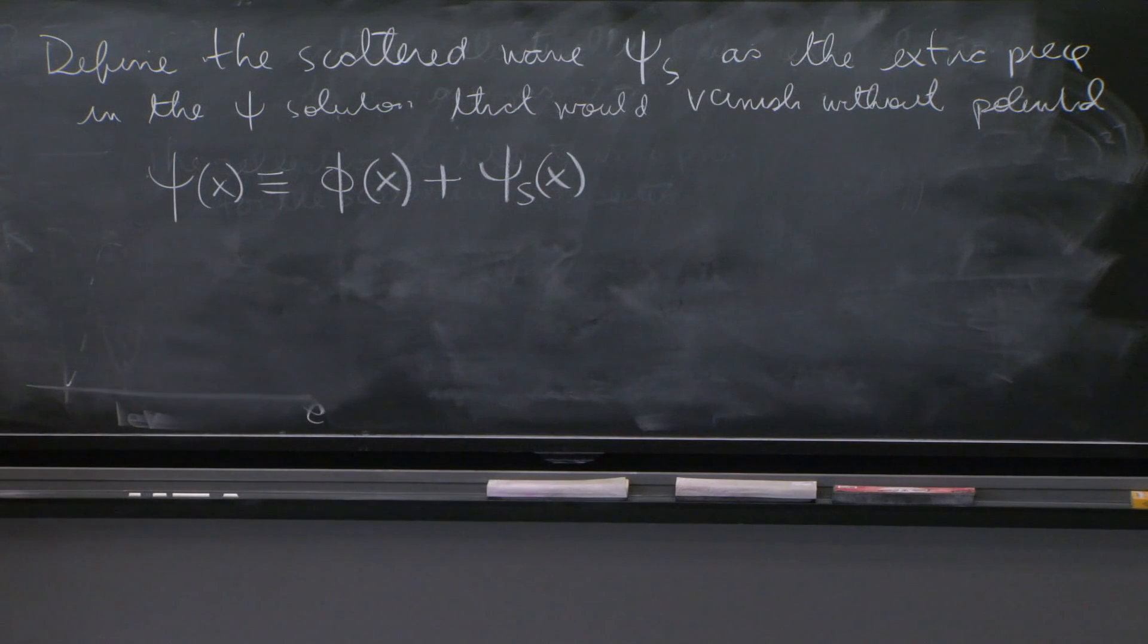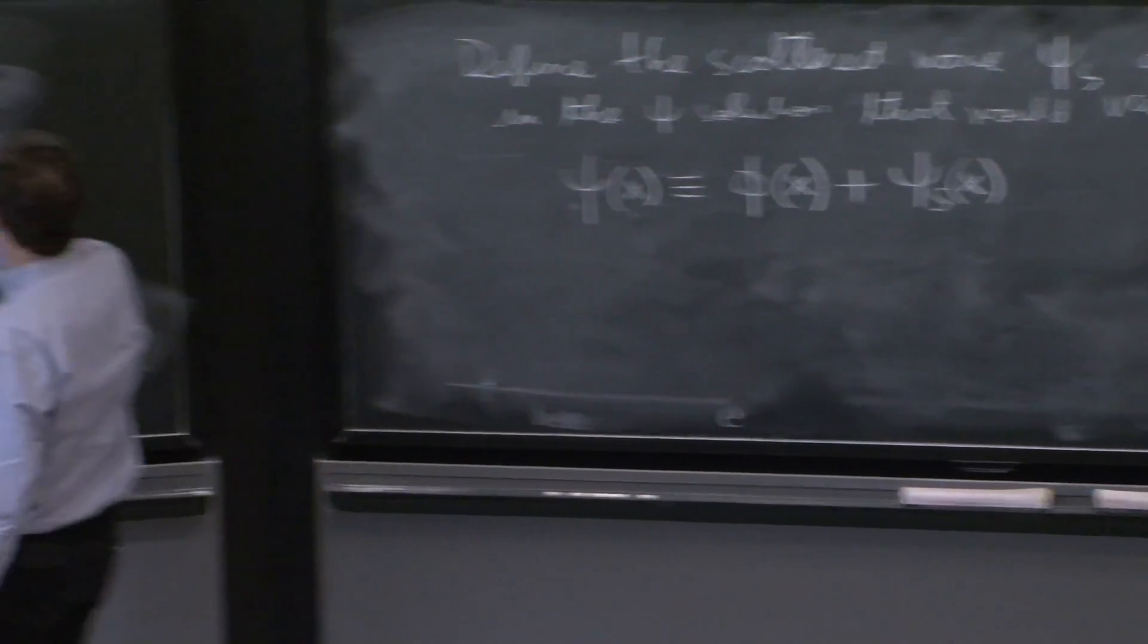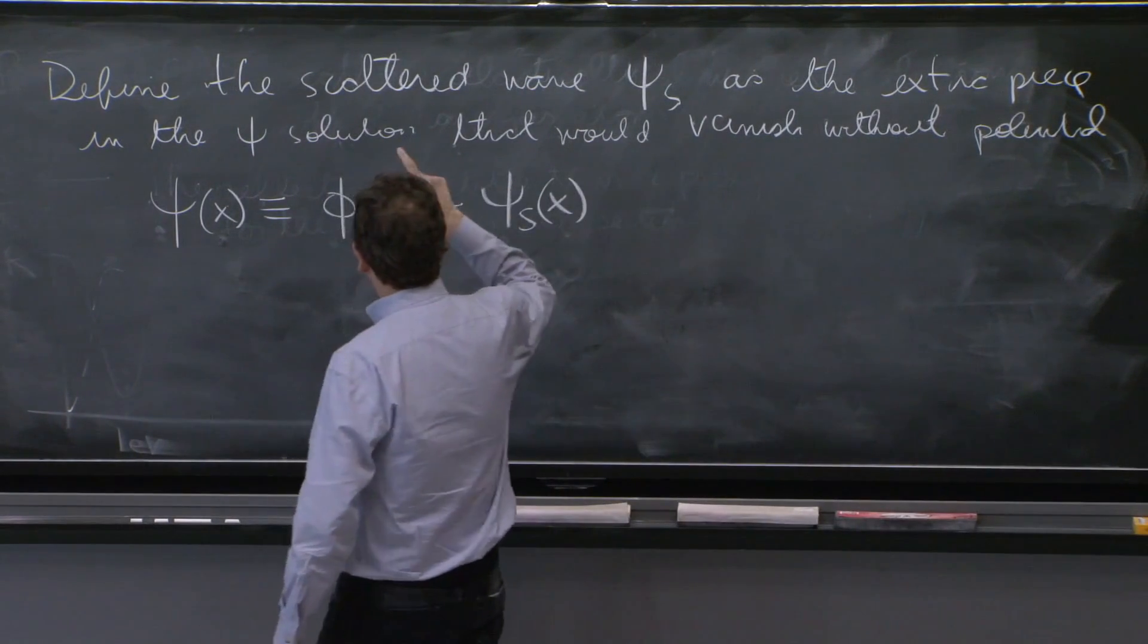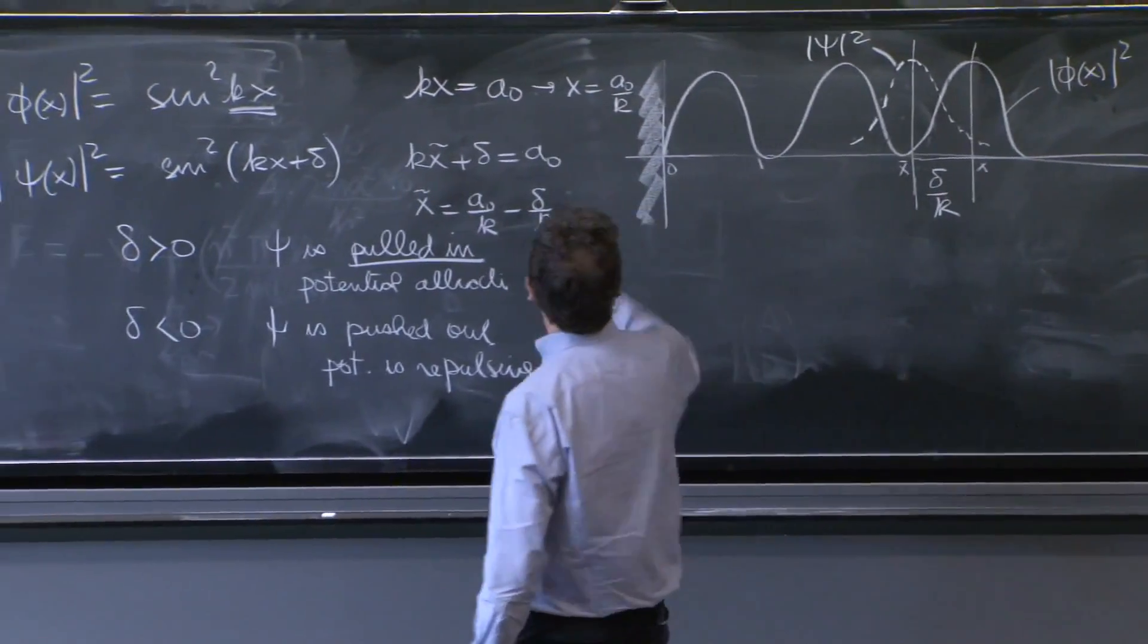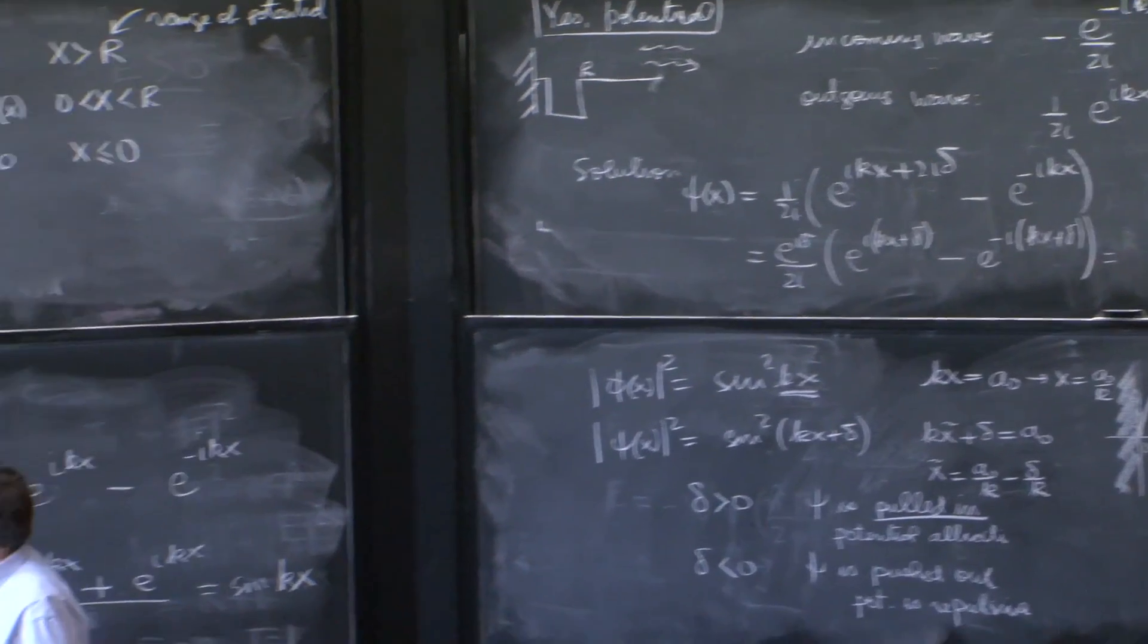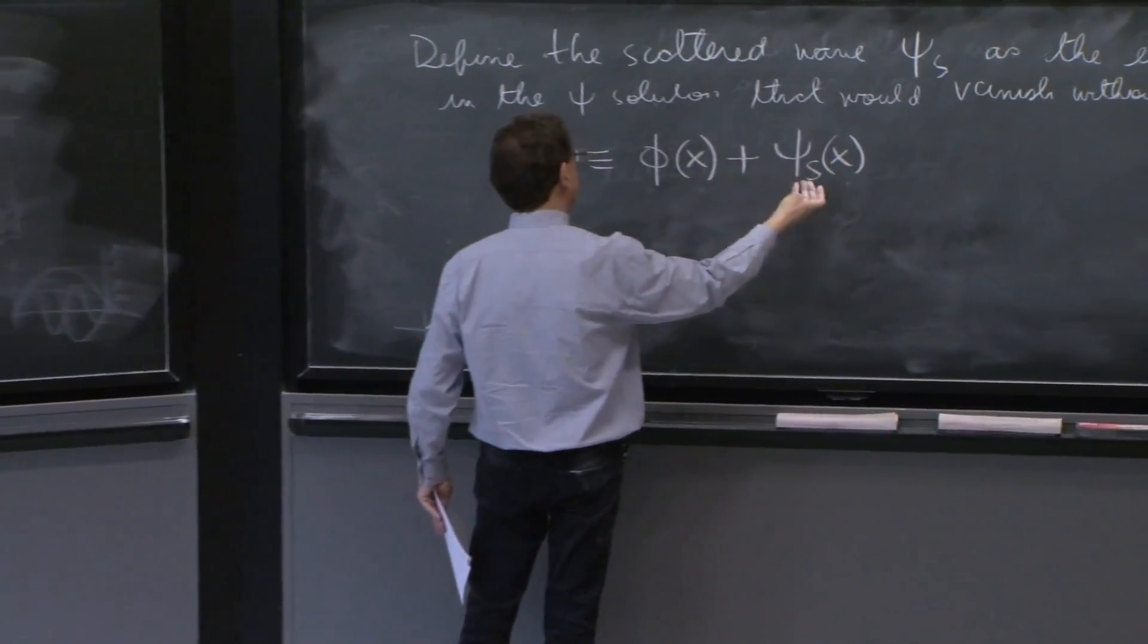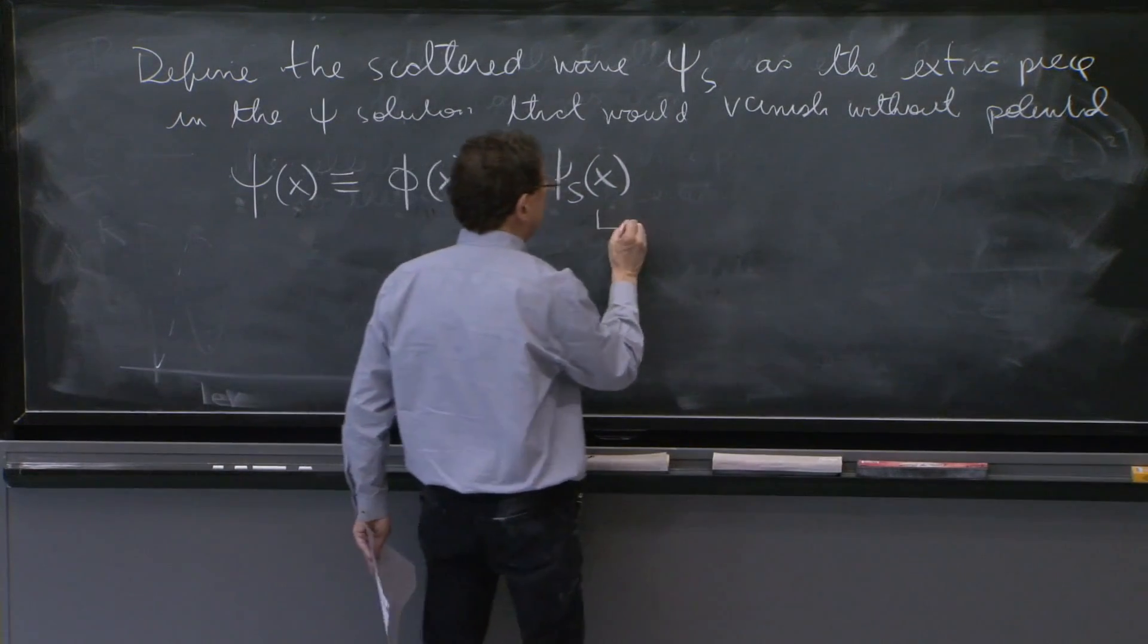The full scattering solution, the full solution when you have a potential, can be written as a solution without the potential, and this scattered thing. Now, you may remember, we just did a second ago, that this original solution and the psi solution have the same incoming wave. The incoming wave up there is the same for the psi solution as for this one. So the incoming waves are the same. So only the outgoing waves are different. And this represents how much more of an outgoing wave you get than from what you would have gotten with psi. So this must be an outgoing wave.